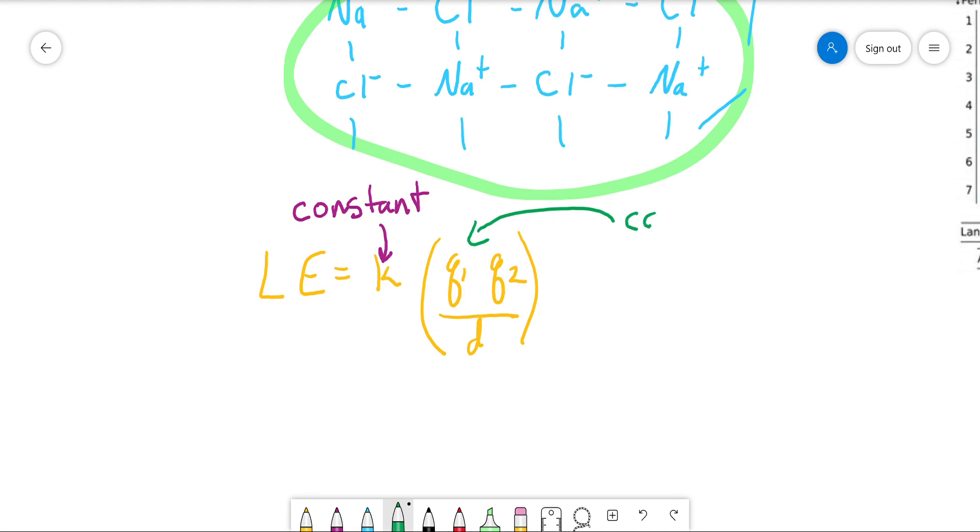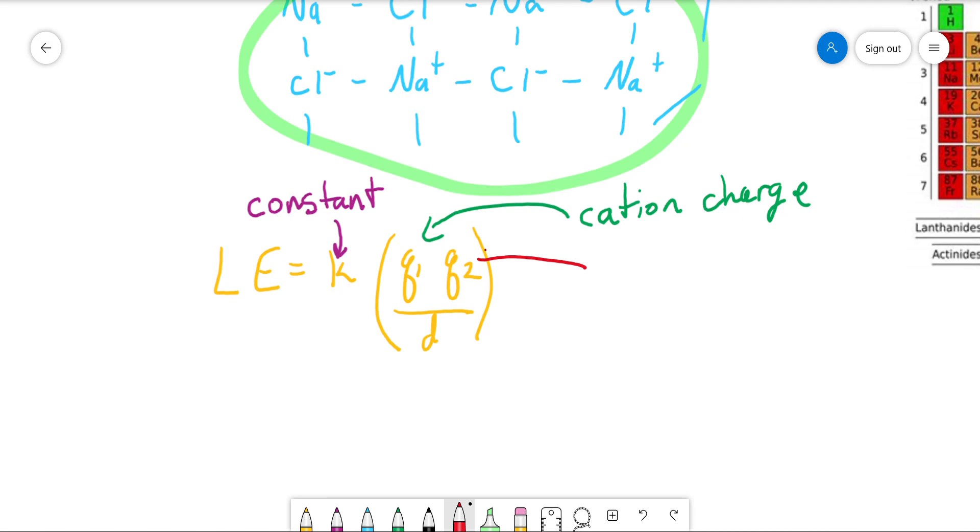q1 is the cation charge. And q2 is the anion charge. And when I say cation charge, anion charge, I'm really just talking one negative, two negative, three negative, so on. Same thing for the cation charge. One positive, two positive, three positive, dot dot dot.